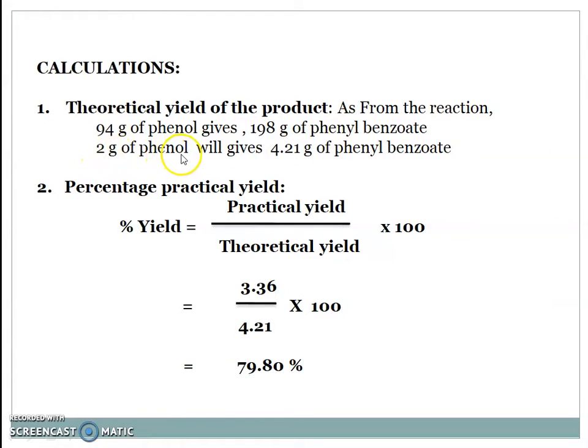Now calculate percent practical yield by using formula. Percent yield equals practical yield divided by theoretical yield times 100. Put the values into the formula. Practical yield is 3.36 grams and theoretical yield is 4.21 grams times 100, which gives 79.80%.